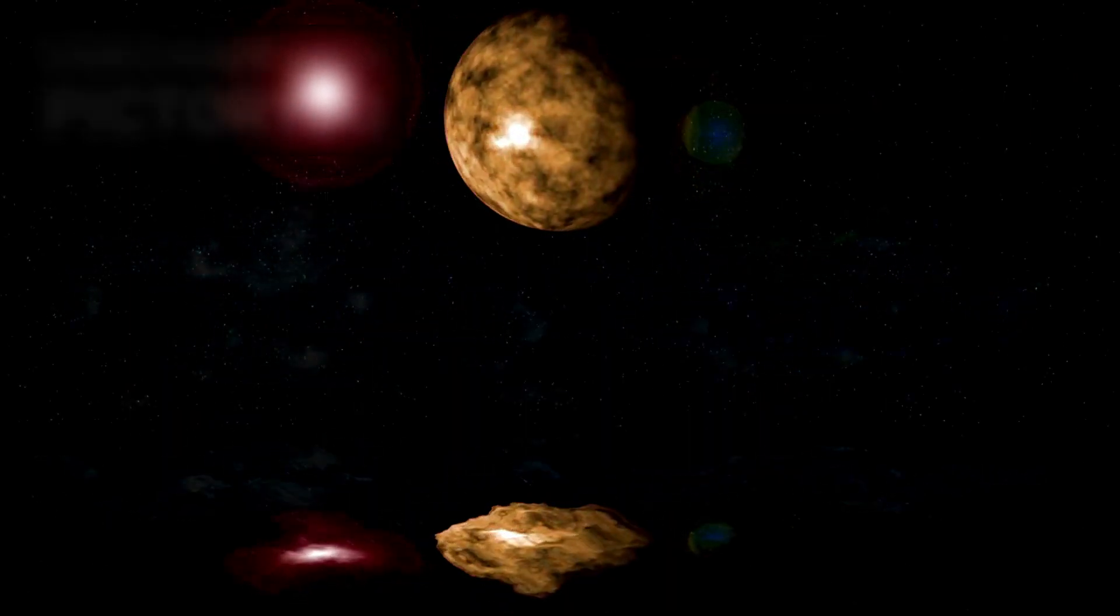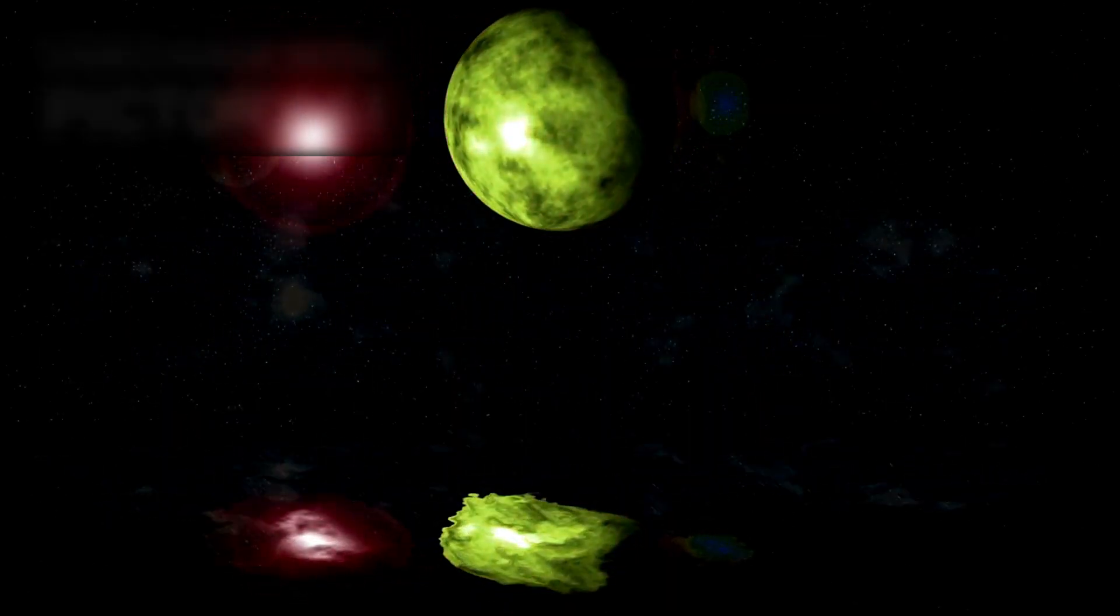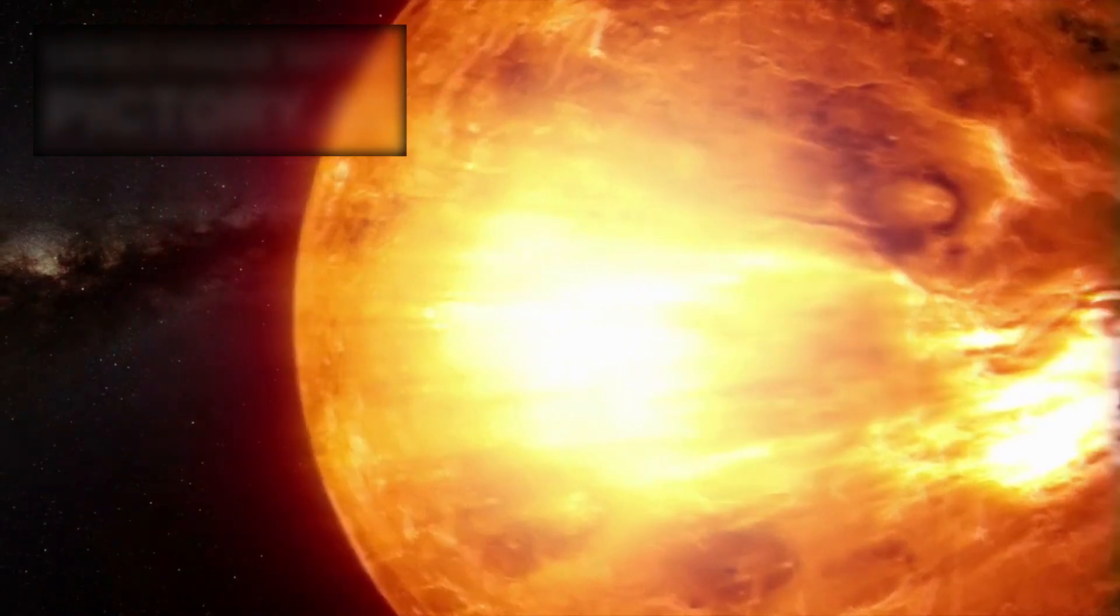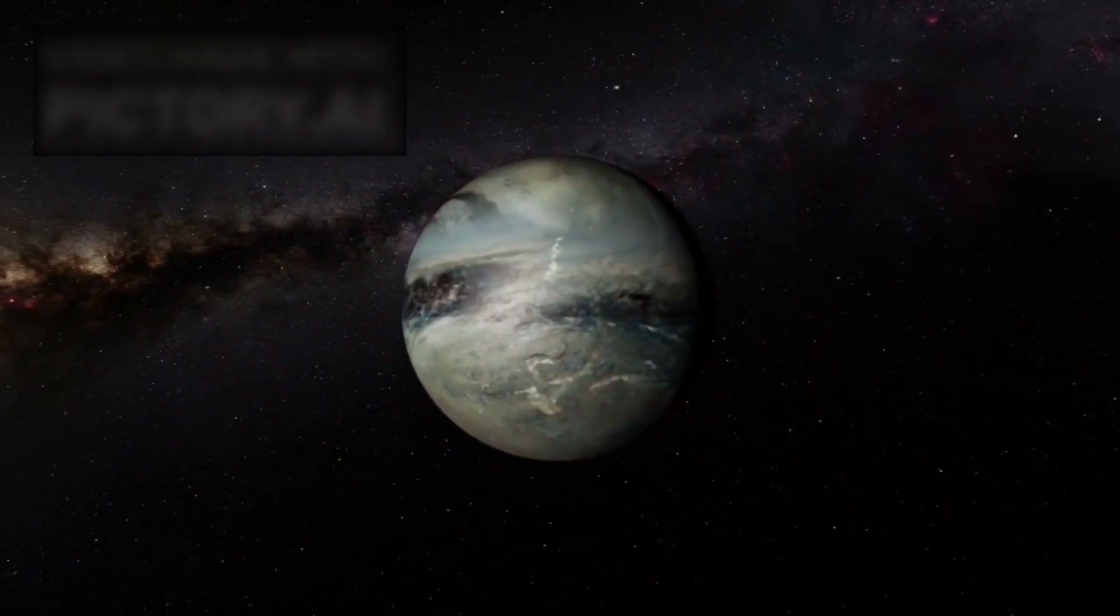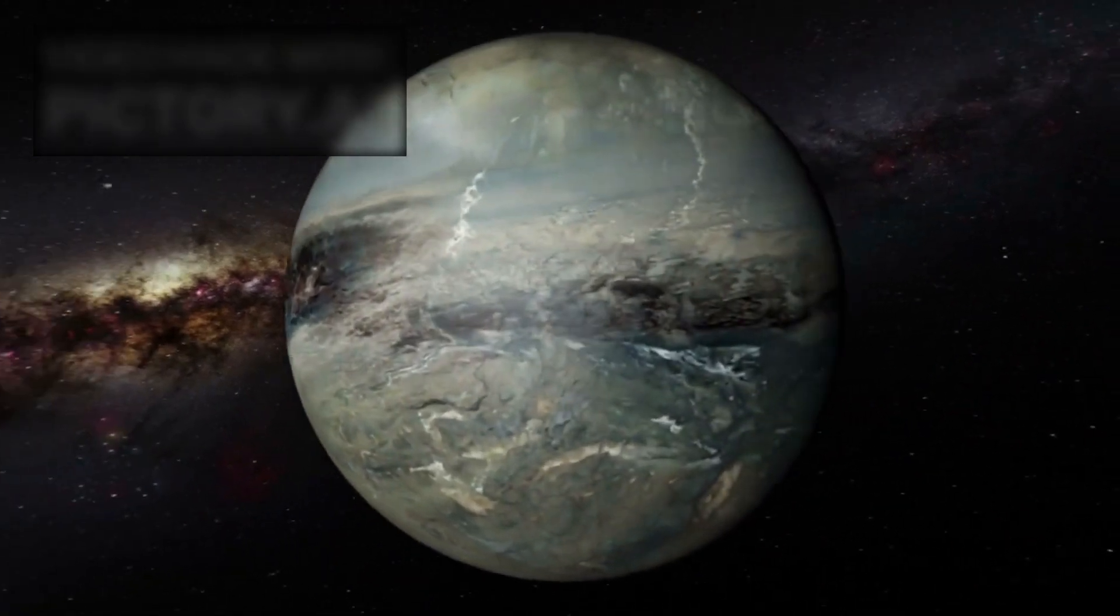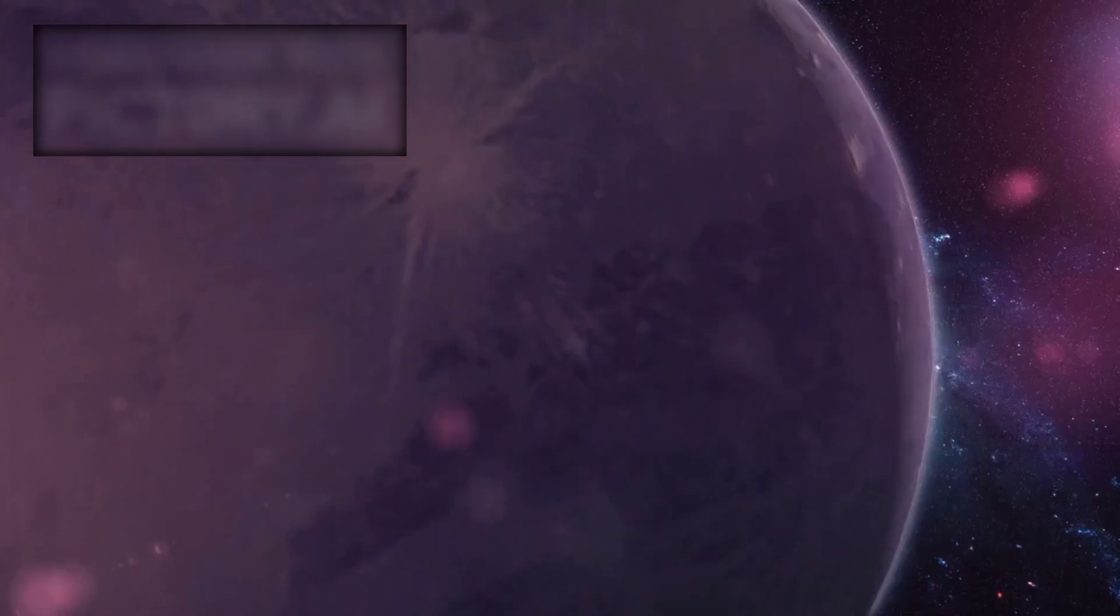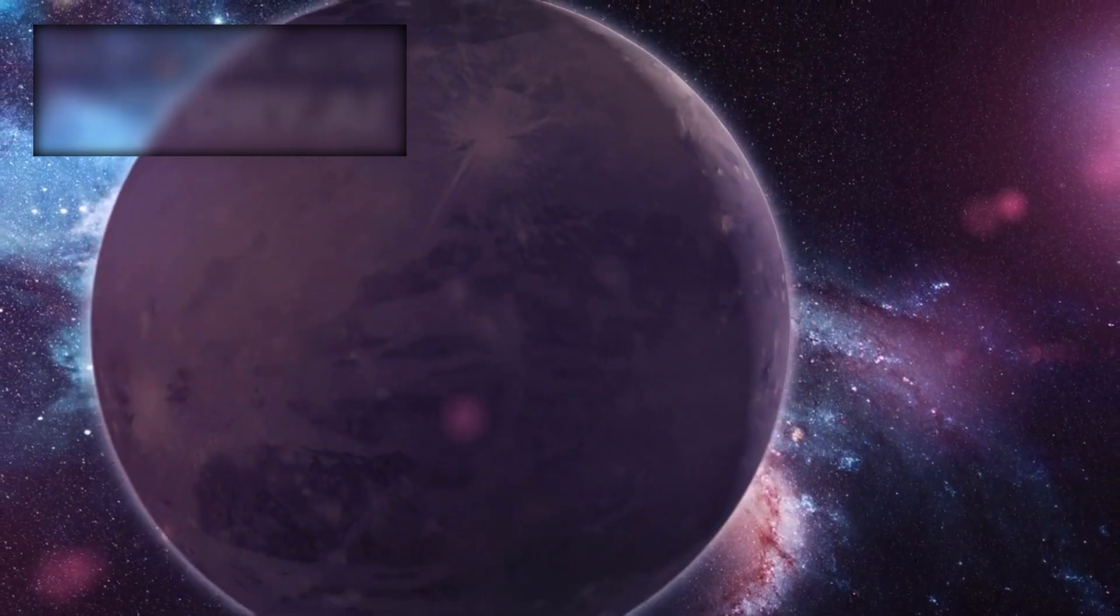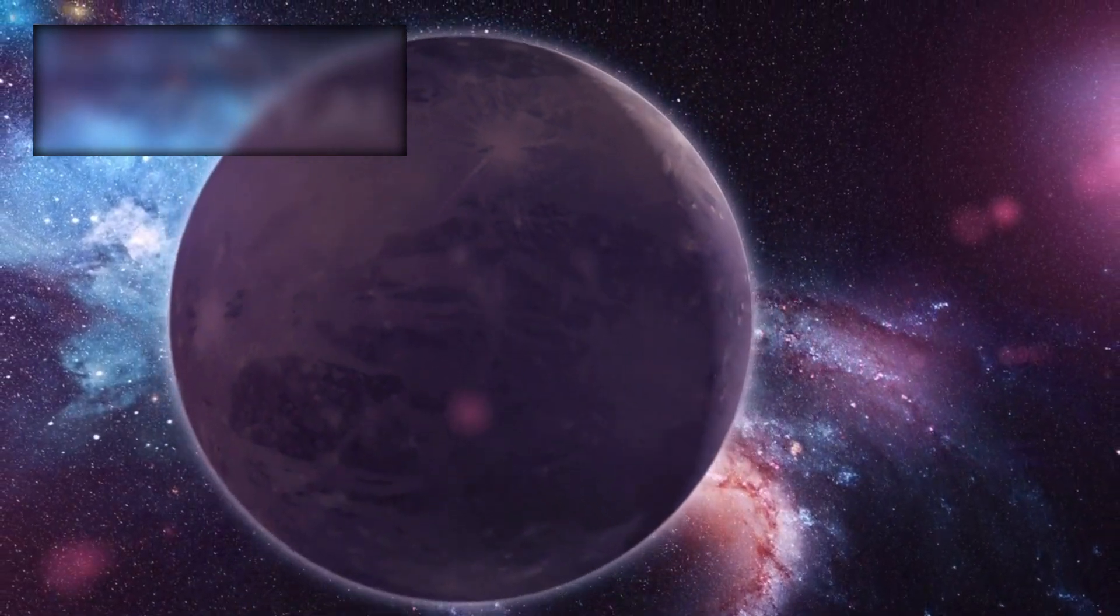One leading theory suggests that Pluto's subsurface ocean formed amid the chaos of the solar system's early days. Pluto is believed to have originated through repeated collisions and impacts, which generated enough heat to melt internal ice. Over billions of years, residual heat fueled by radioactive decay could have kept a portion of its interior in liquid form.